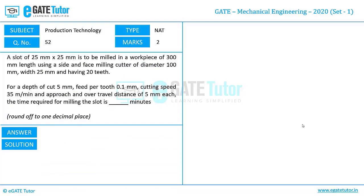A slot of 25 mm x 25 mm is to be milled in a workpiece of 300 mm length using a side and face milling cutter of diameter 100 mm, width 25 mm, and having 20 teeth. For a depth of cut of 5 mm, feed per tooth 0.1 mm, cutting speed of 35 meter per minute, and approach and over-travel distance of 5 mm each, the time required for milling the slot is how many minutes? We need to round off the solution to one decimal place.